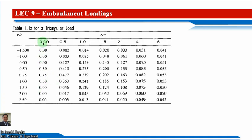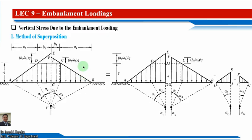Table 1 provides values as a function of the ratio x over a and z over a, from which we can directly obtain the influence factor I_z. If z over a equals a given value and x over a equals a given column value, we can read the influence factor I_z directly from this table.